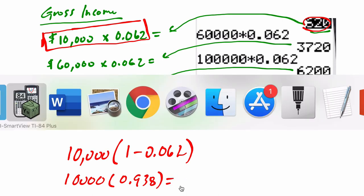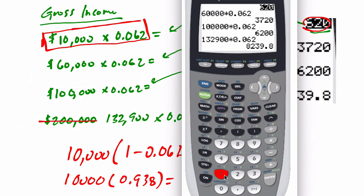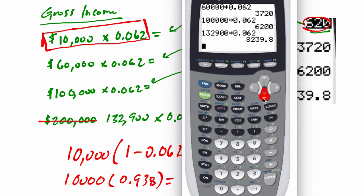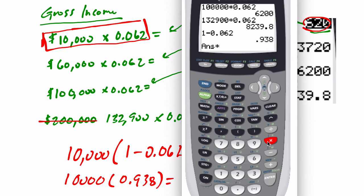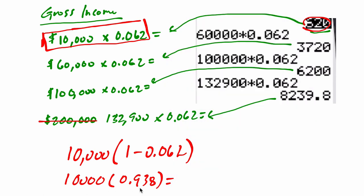So we can check this on the calculator. If you did 1 minus 0.062, it is 93.8%. Multiply that by 10,000 and that gives you 9,380, which is what's left — because 10,000 minus the 620 is 9,380. All right, I hope this helps.